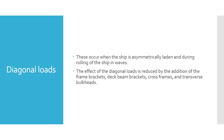Diagonal loads occur when the ship is asymmetrically laden and during rolling of the ship in waves. The effect of diagonal loads is reduced by the addition of frame brackets, deck beam brackets, cross frames, and transverse bulkheads. Detailed pictures of these structures will be shown in a future video, as including everything in one video would make it too long.